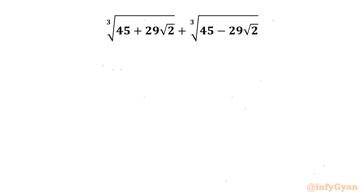Welcome back to Infigyan, my dear friends. In this video we are having another very interesting question from Math Olympiads. We have to simplify the cube root of 45 plus 29 root 2, plus the cube root of 45 minus 29 root 2. We will be solving this question in two different ways.